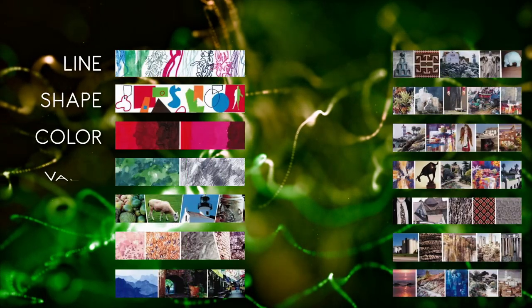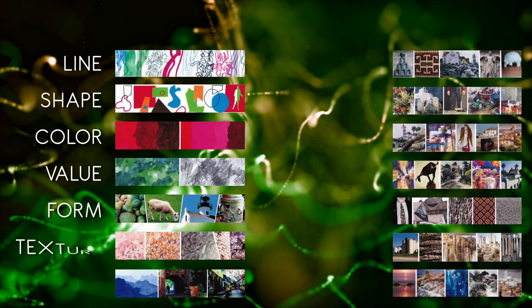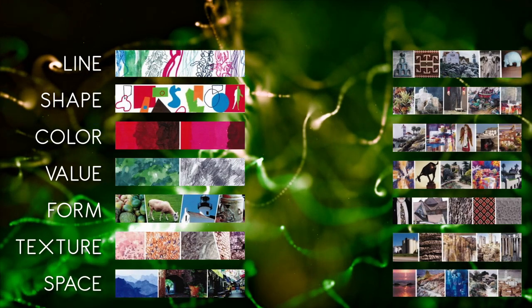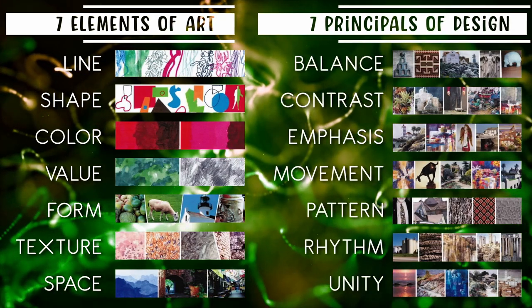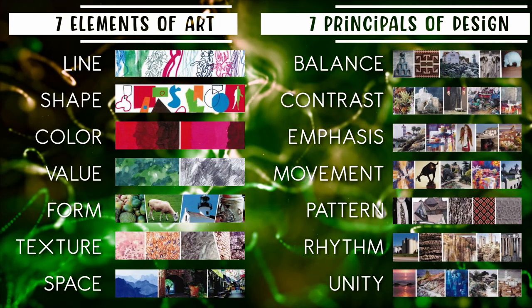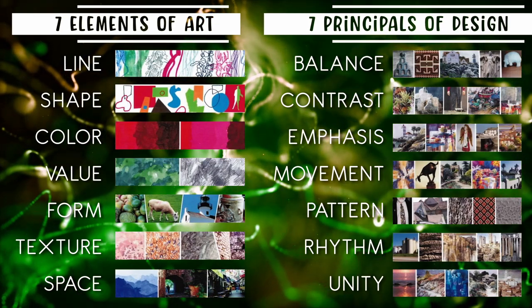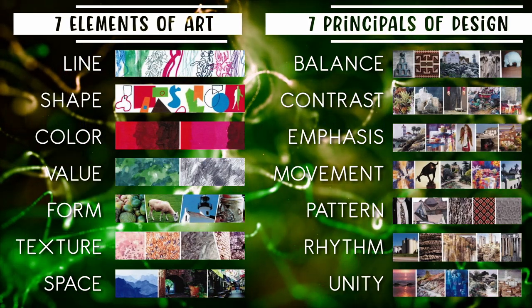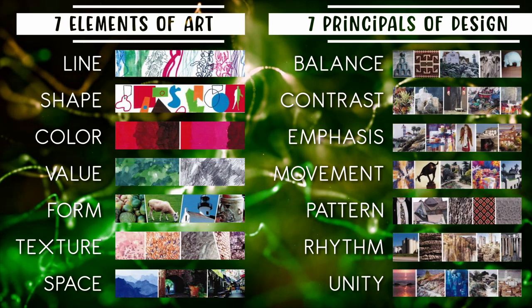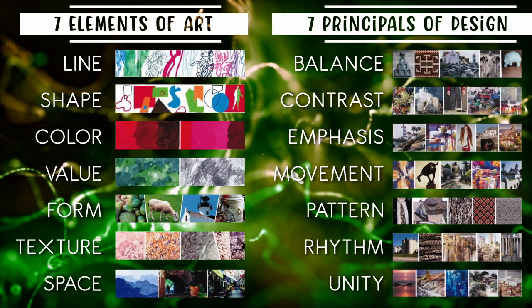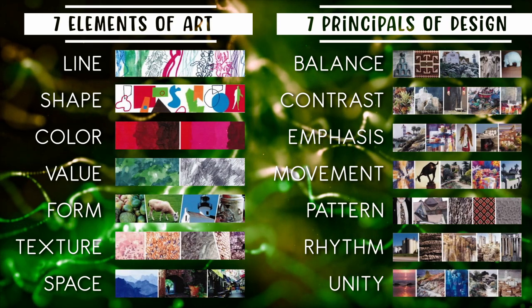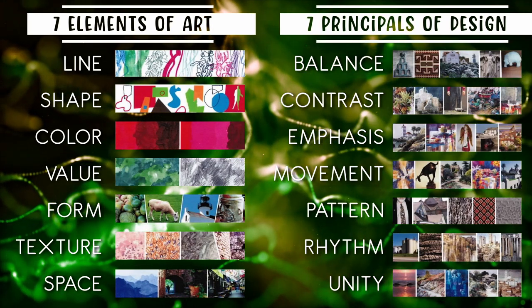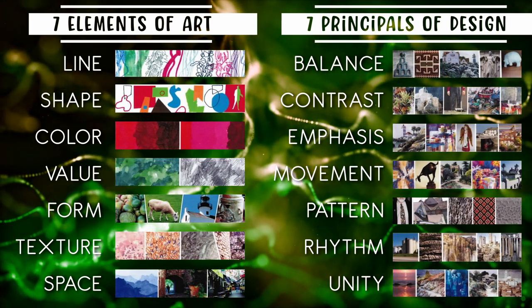Starting with the basics — you have to know your seven elements of art and your seven principles of design. These are the visual language of art. The elements are line, shape, color, value, form, texture, and space. The principles of design are balance, contrast, emphasis, movement, pattern, rhythm, and unity.